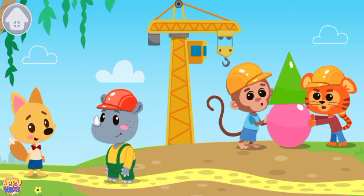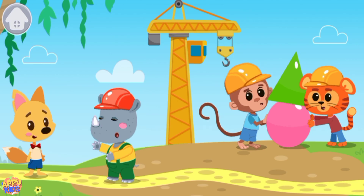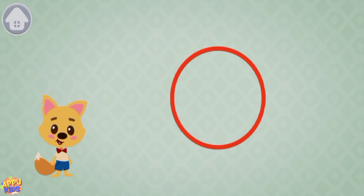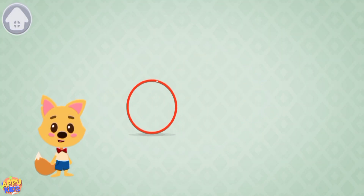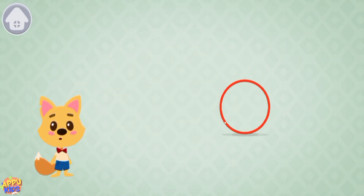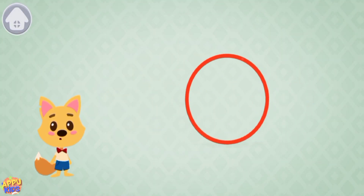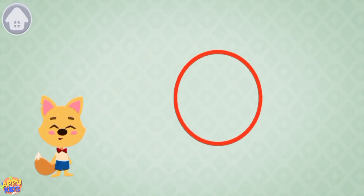This is a circle. The circle has no sides and no angles, so it can roll. The circle is round.